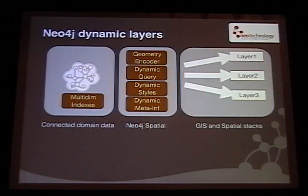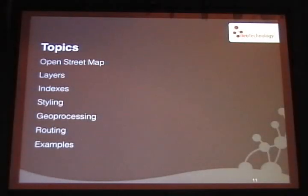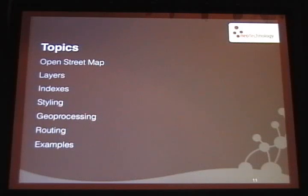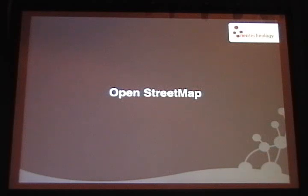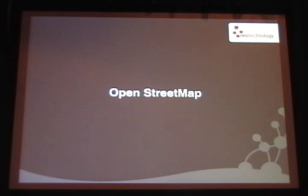I'll briefly talk about the different aspects we've had to deal with: OpenStreetMap basics, layers, indexes, geoprocessing, routing, and some examples. OpenStreetMap — what's cool about it is that it's a very big wiki. The geographic part is comparably small. The bulk of the logic is in the ways, the relations, and the tags. All of these are basically undefined — you can have relations of relations, and tags with no enforced ontology. It's a very interesting dataset.